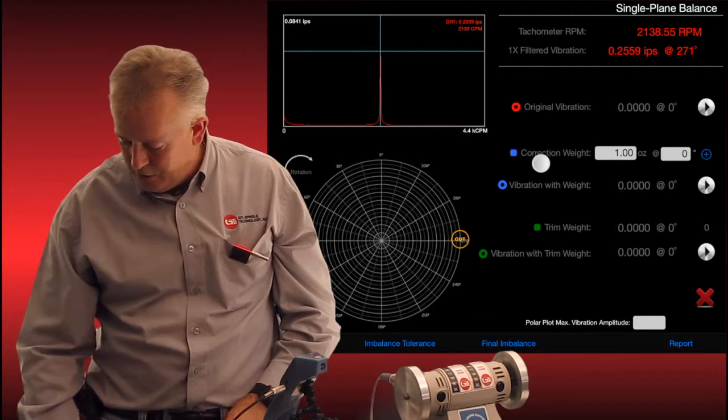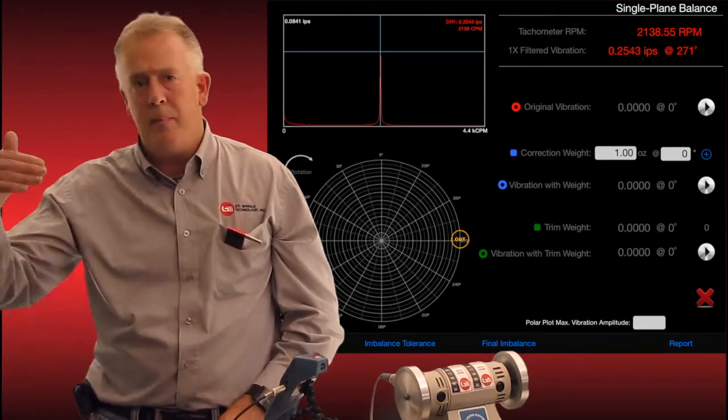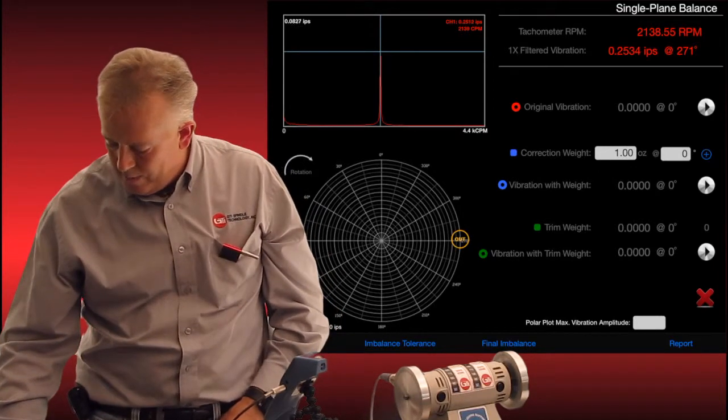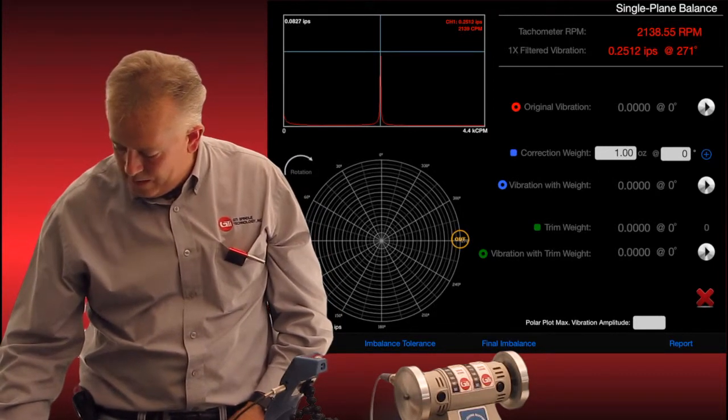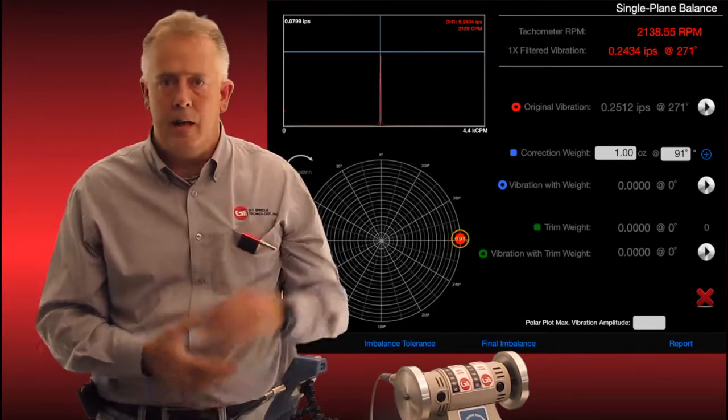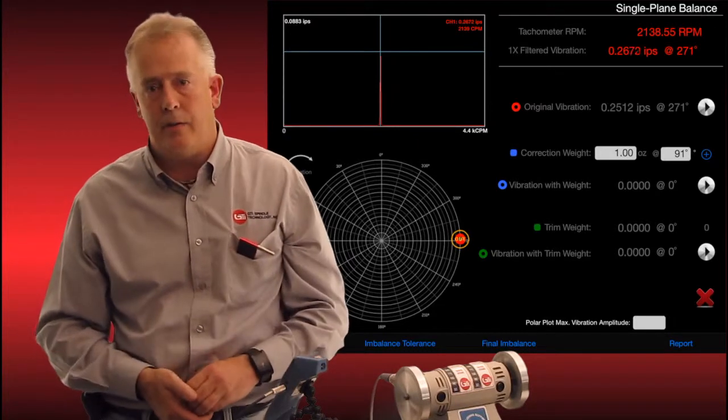So you can see this hierarchy. We've got original vibration, correction weight, vibration with weight. We start from the top and just work our way down. That's how simple it is. So let's do that. We're going to tap on our original vibration, that little arrow. And what that did is just input the data that it's reading right into that spot so it can start making its calculations.